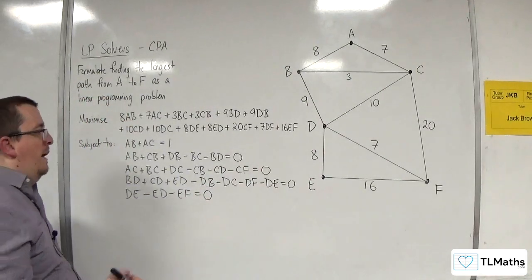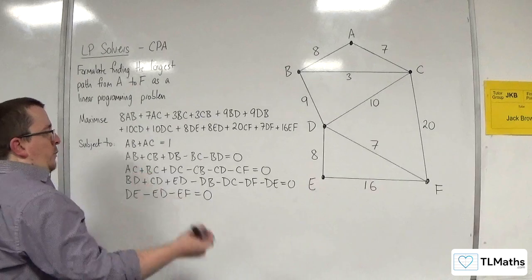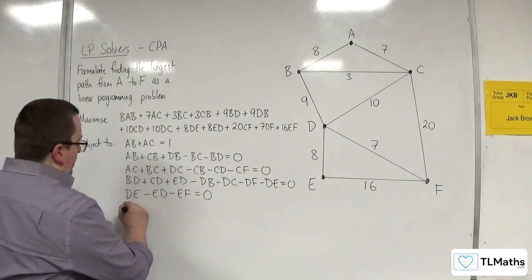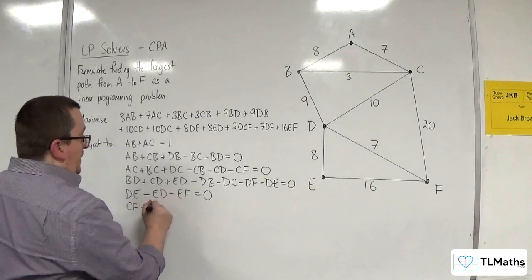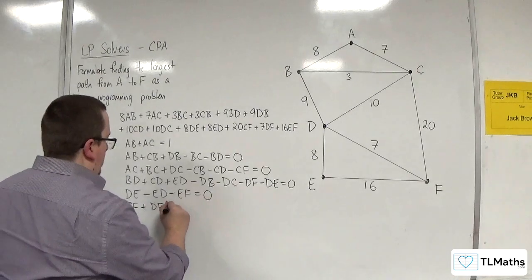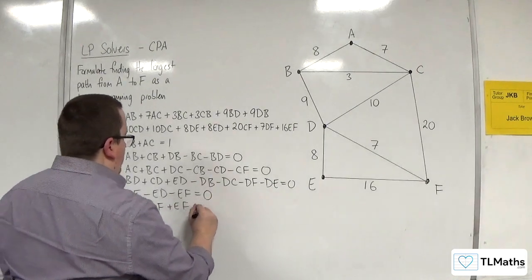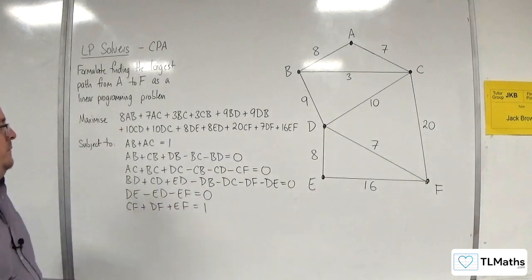And then we've got a constraint for F, so that's all of them going in, which is CF plus DF plus EF, and only one of those should be picked, so that's going to be equal to 1.